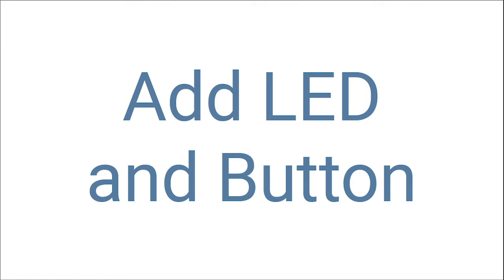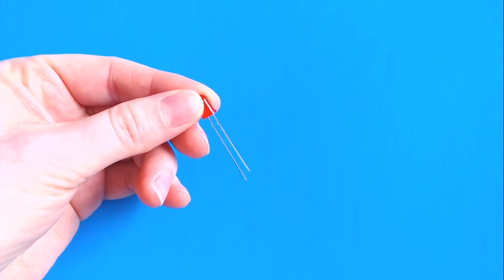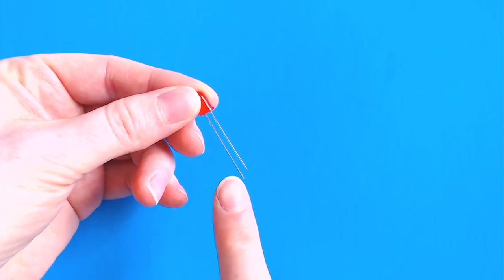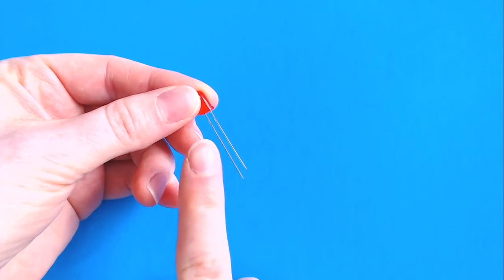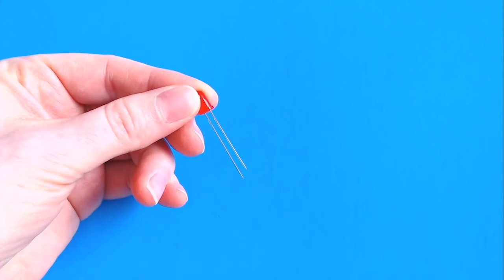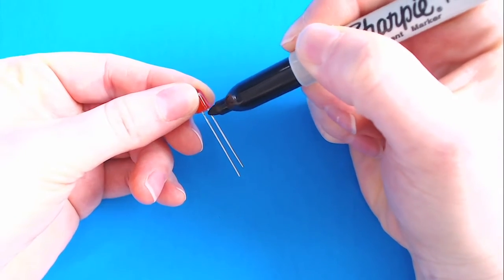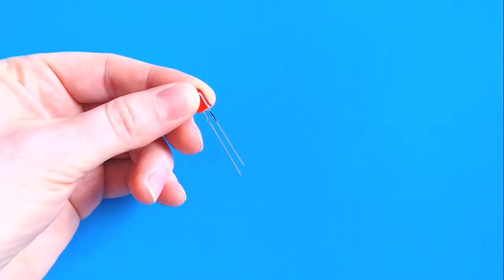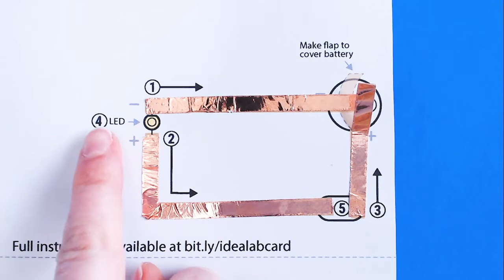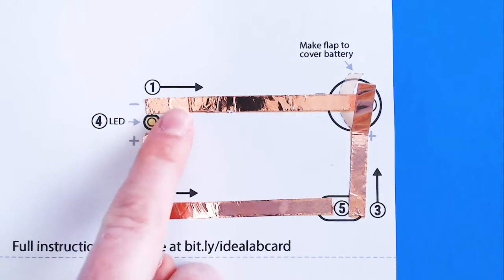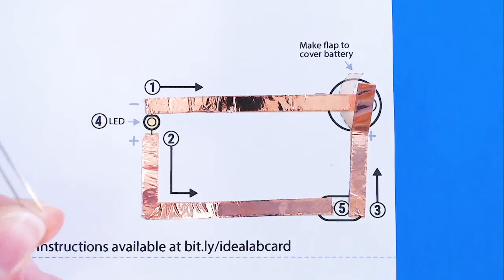Now it's time to add some parts to our paper circuit that will use the battery power. Let's start with the LED. This electronic part has to be plugged in a certain way in order to work in the circuit. LEDs have two wires coming out of them. The longer wire is the positive end of the LED and the shorter wire is the negative. You can mark the negative wire with a black permanent marker or nail polish to help identify it later. On the template, circle number four points to where the LED will go. There's a positive and negative symbol next to each line of copper tape to tell us where each wire on the LED will go.